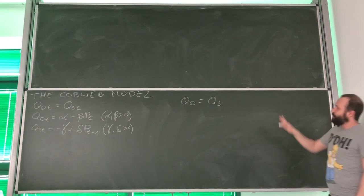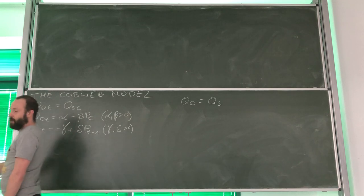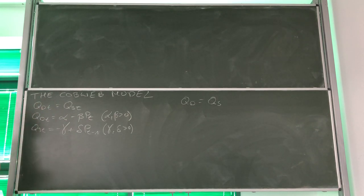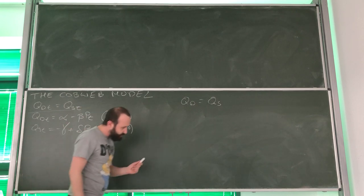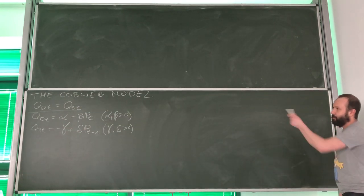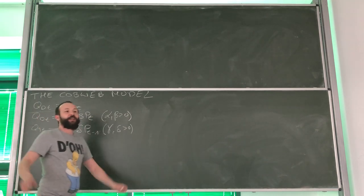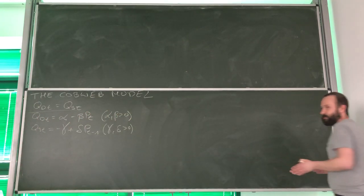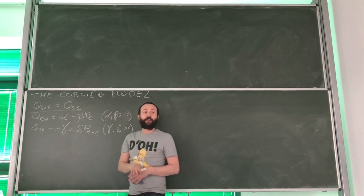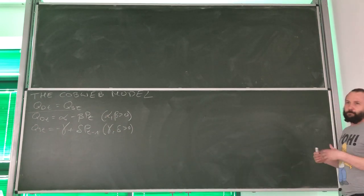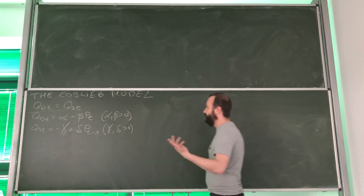The equilibrium condition says that when quantity demanded equals quantity supplied, this is where we have the equilibrium price and quantity. Here we are simply assuming that at each period we will have equilibrium in a market-clearing sense — meaning there will be no excess demand nor excess supply. This is not true for every market, but it is true for markets for perishable goods like potatoes.